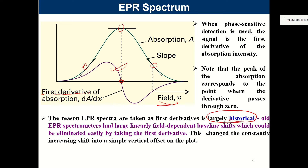That is largely historical reasoning rather than much of the science. The science and instrumentation have evolved over time and undergone much transformation, but still the old conventions continue in the appearance of the spectrum. In the early days, it was an effort to overcome field dependence of the magnet — line shift in the spectrometer — and they found it is better to take the first derivative rather than relying on the absorption spectrum as obtained by the instrument.